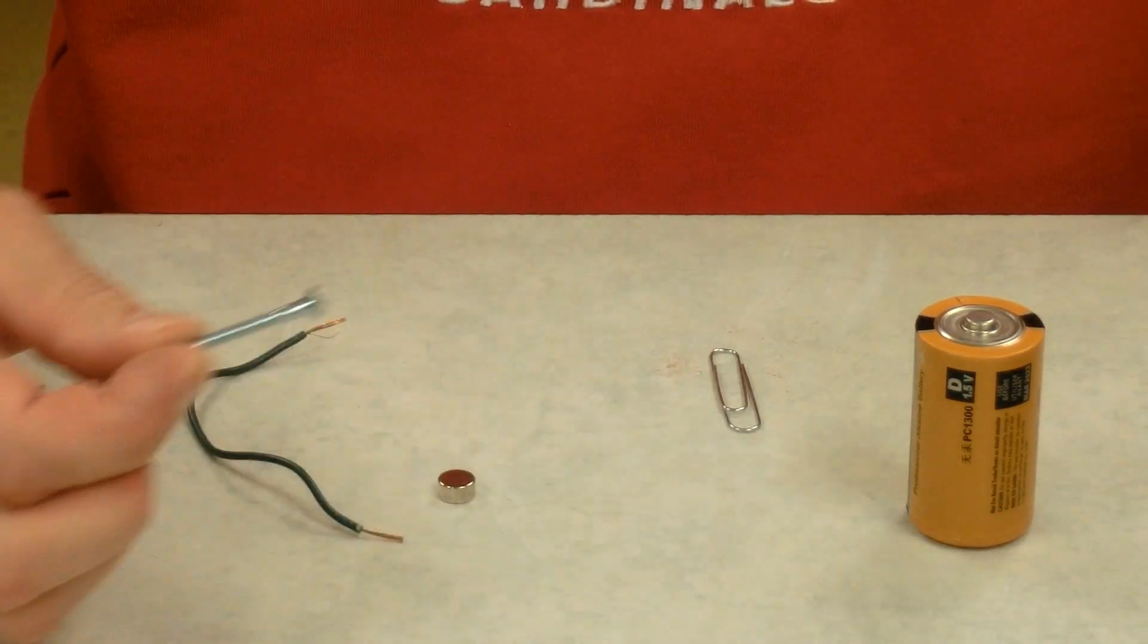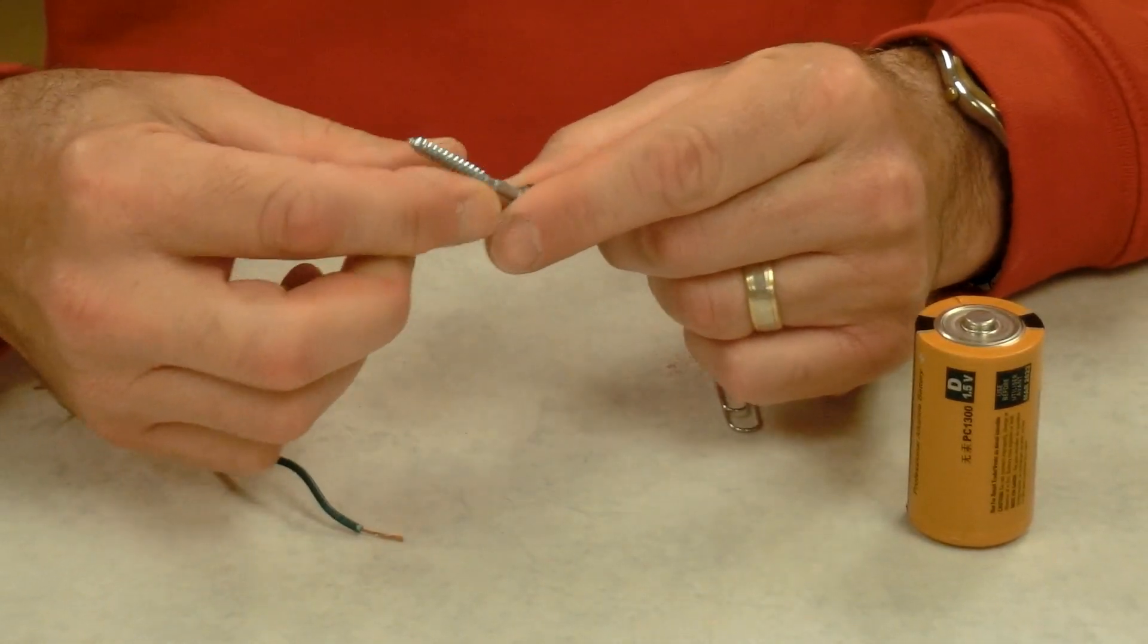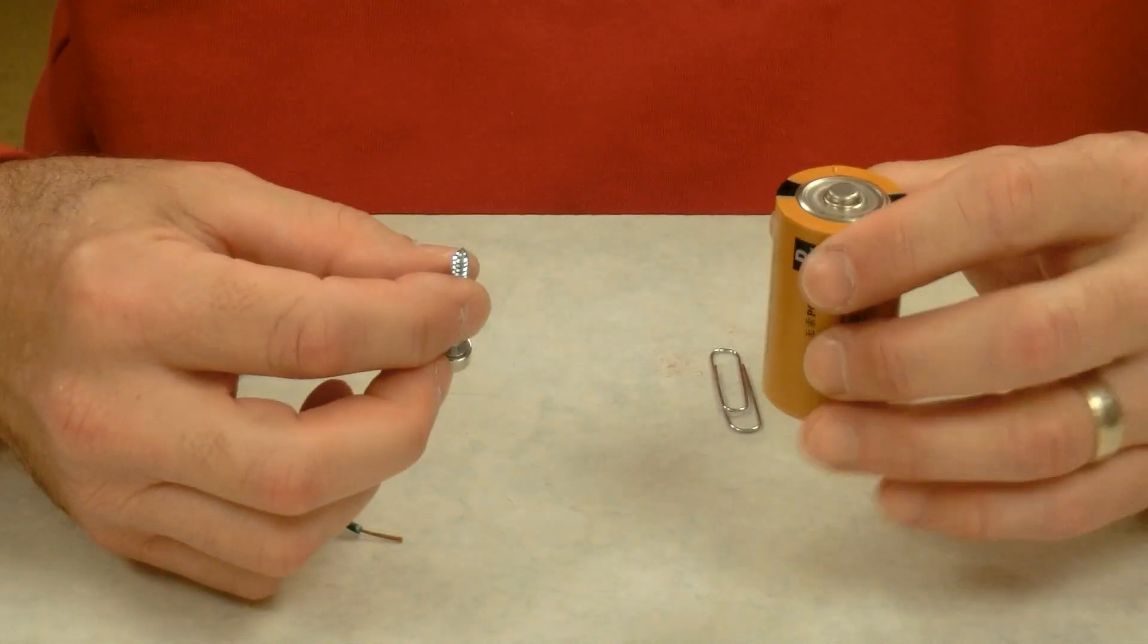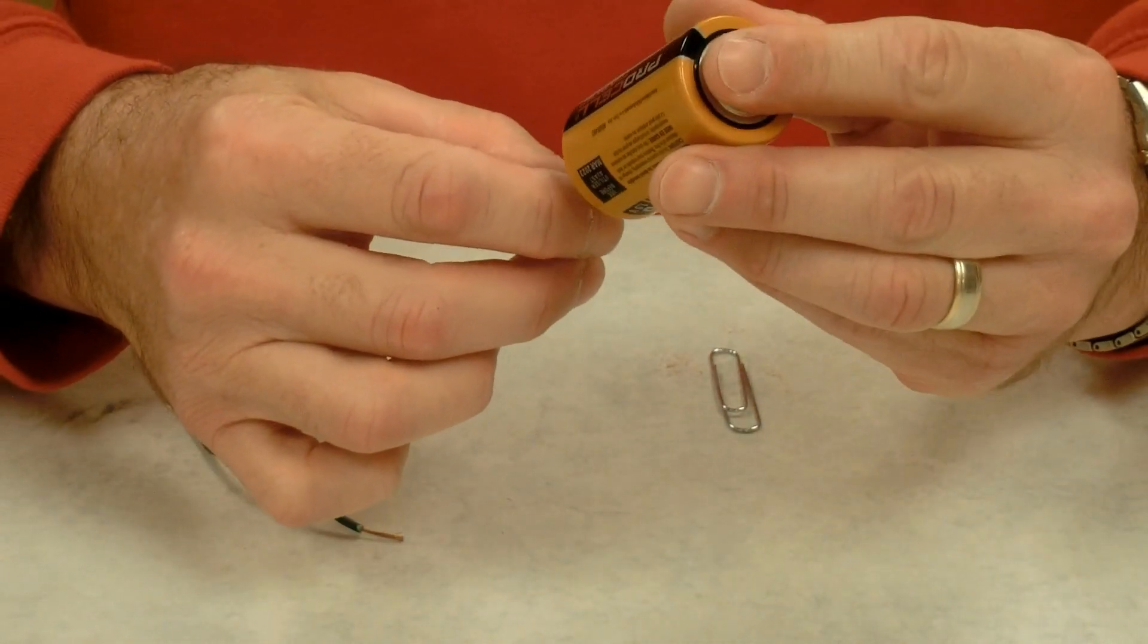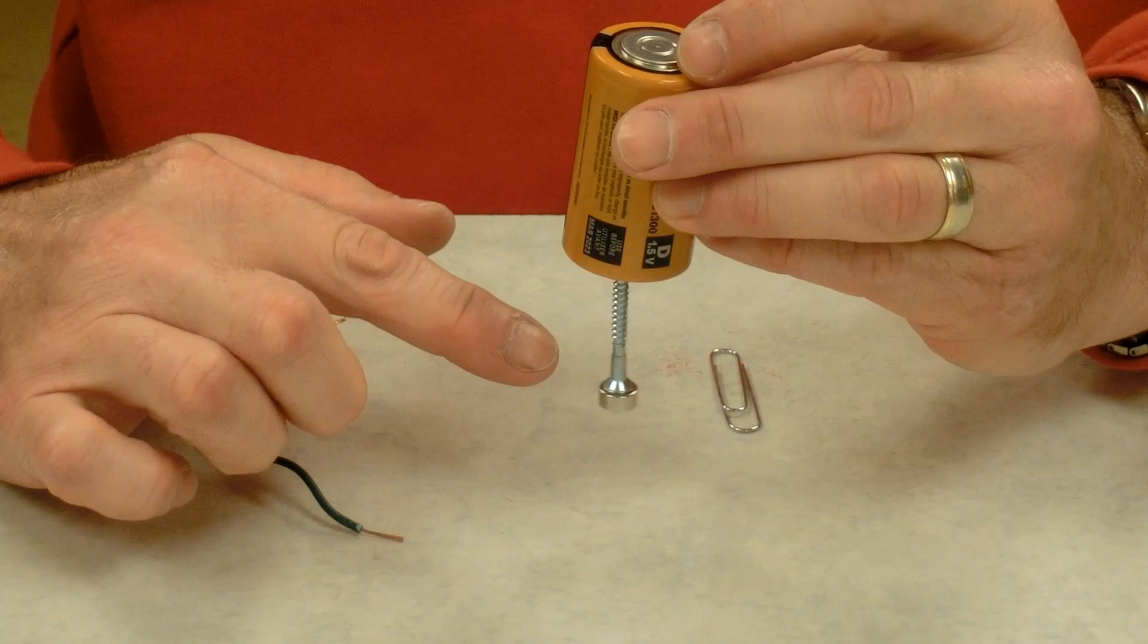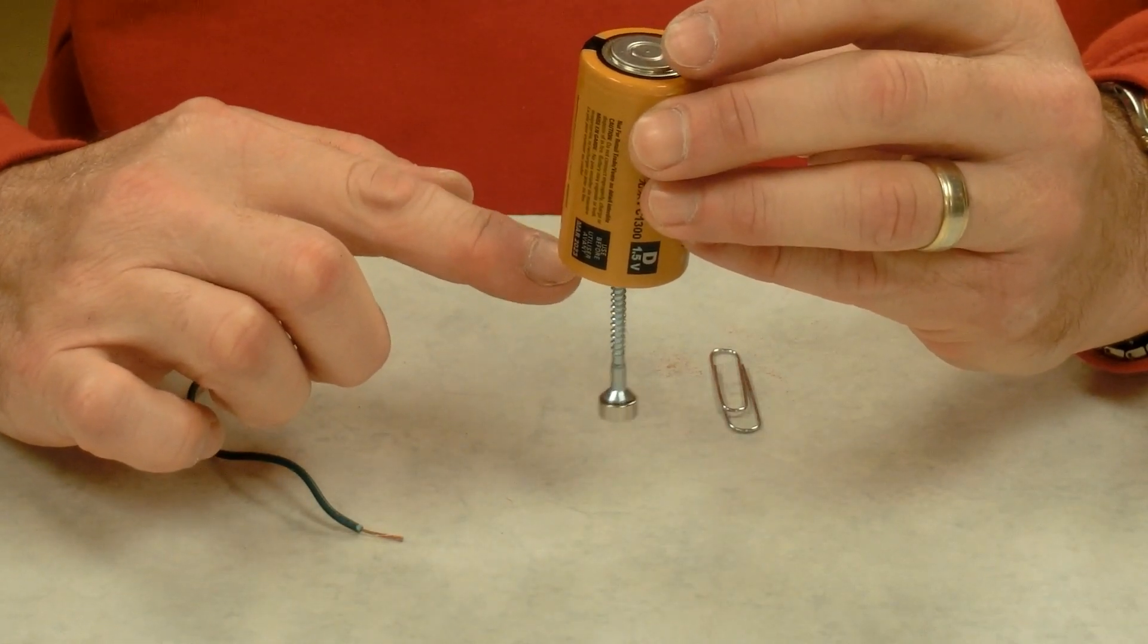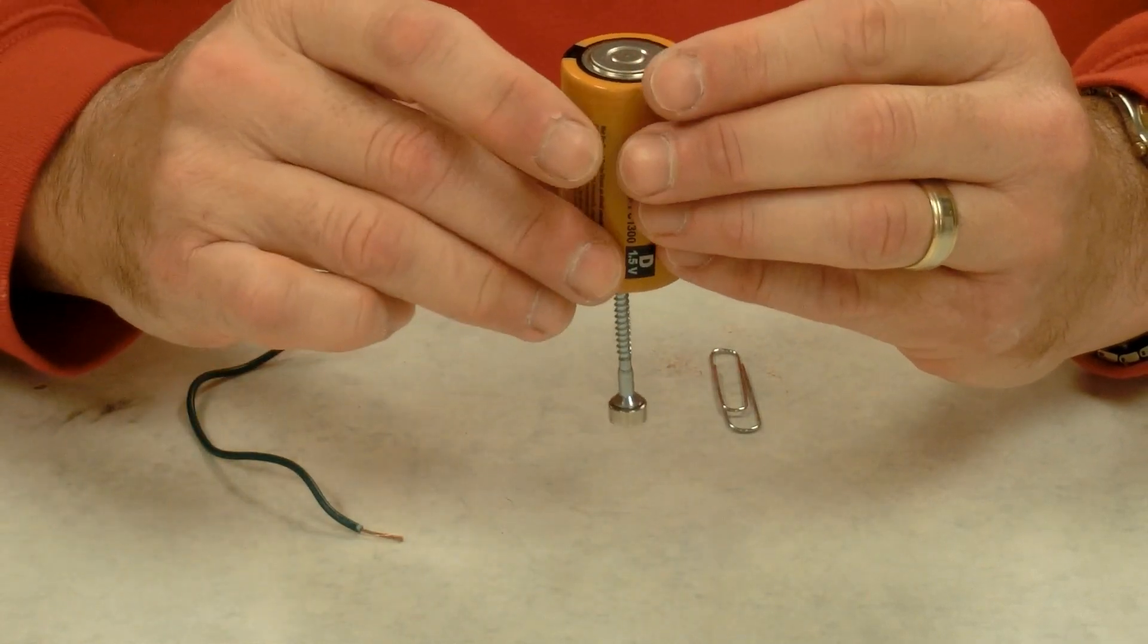I'm going to take my neodymium magnet and put it on the end of my screw. I'll then take the screw and stick it on my dry cell. The neodymium magnet is strong enough to magnetize the screw which then is attracted to the steel on our dry cell.